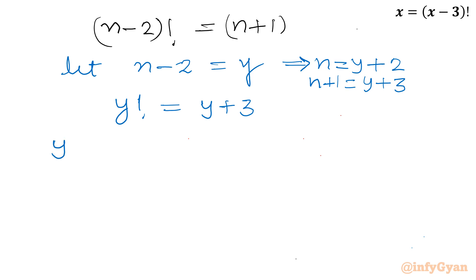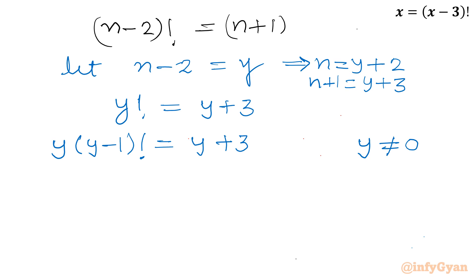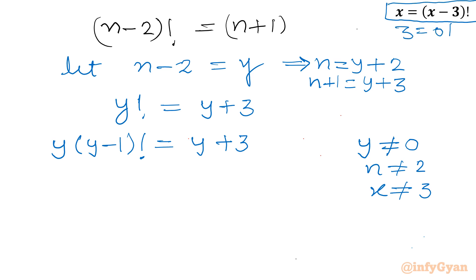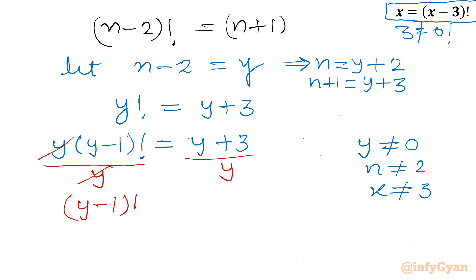Using the recursive formula once again, y! = y times (y-1)!, which equals y + 3. For y not equal to 0 — meaning n not equal to 2, meaning x cannot equal 3 (we verify that 3 is not a solution since 0! = 1, not 3) — we can divide both sides by y. This gives (y-1)! = 1 + 3/y.